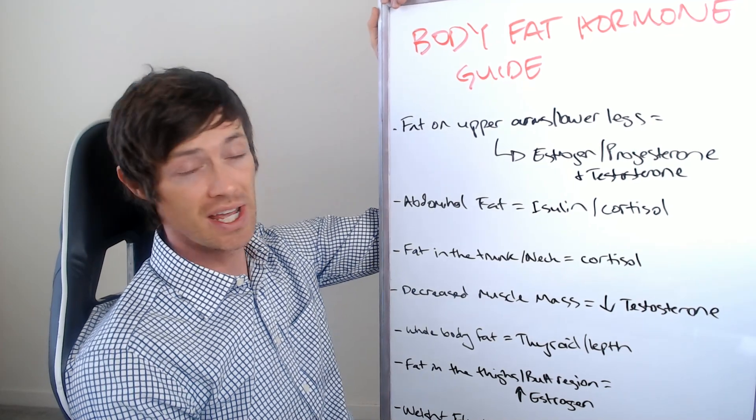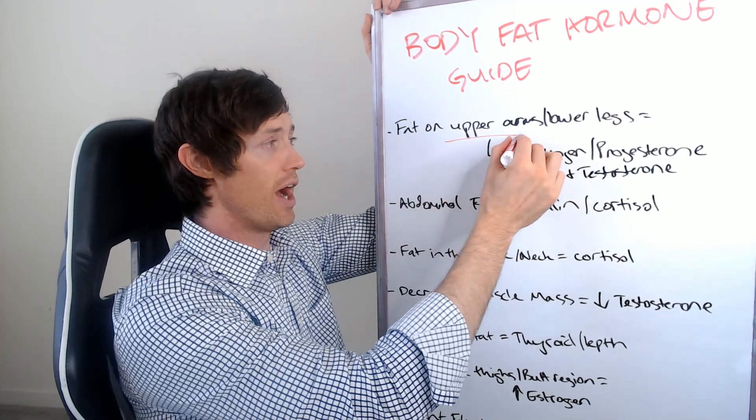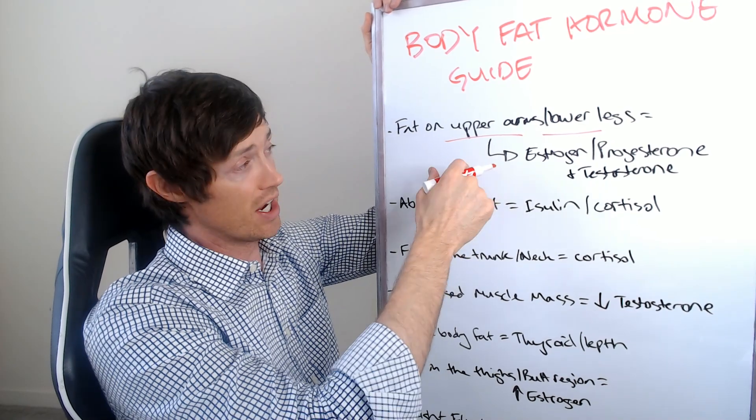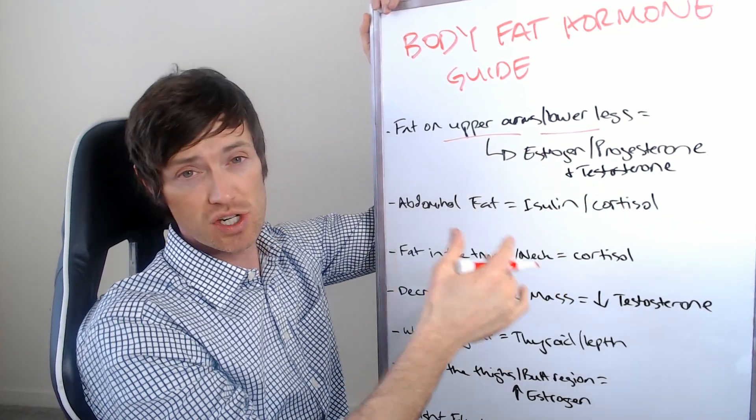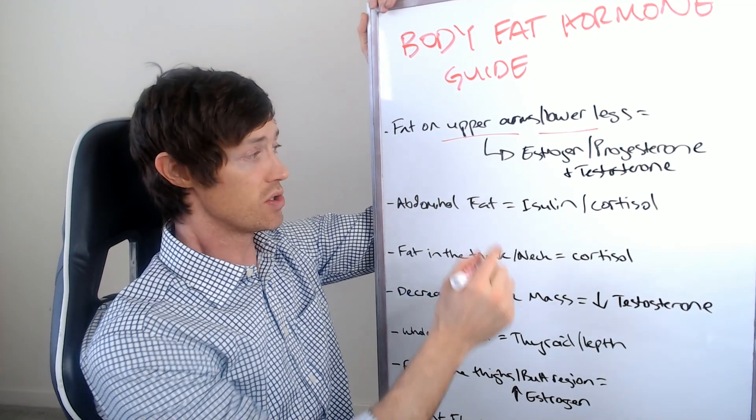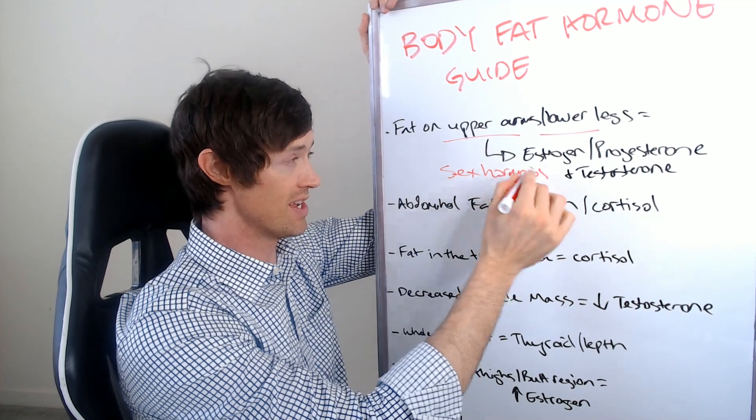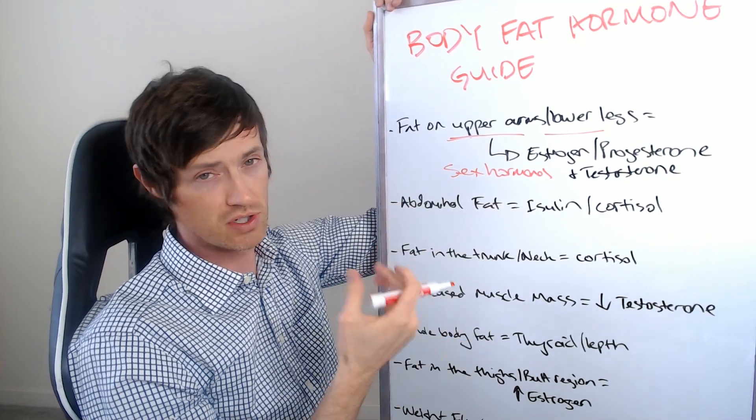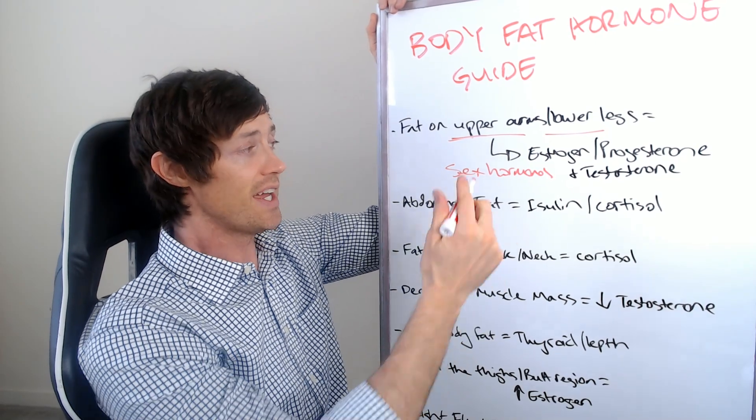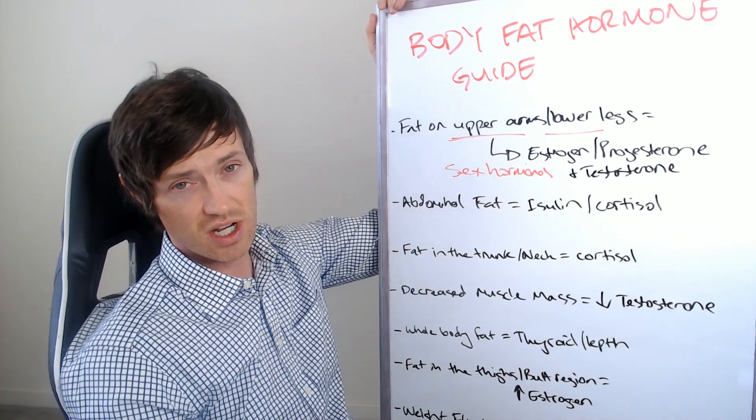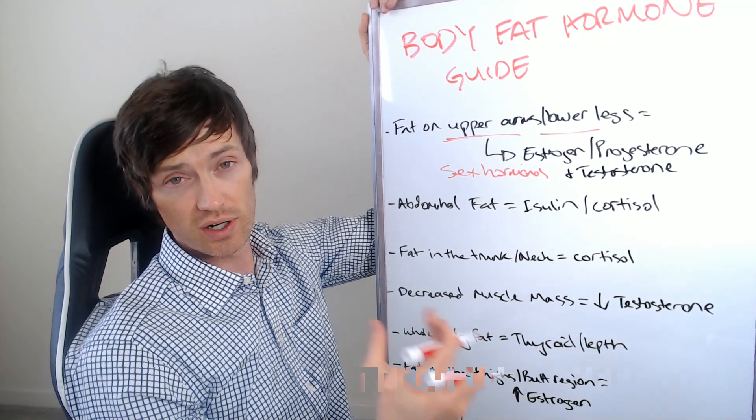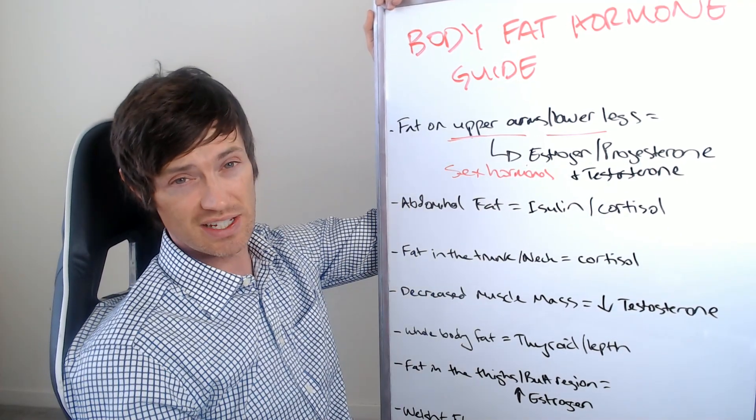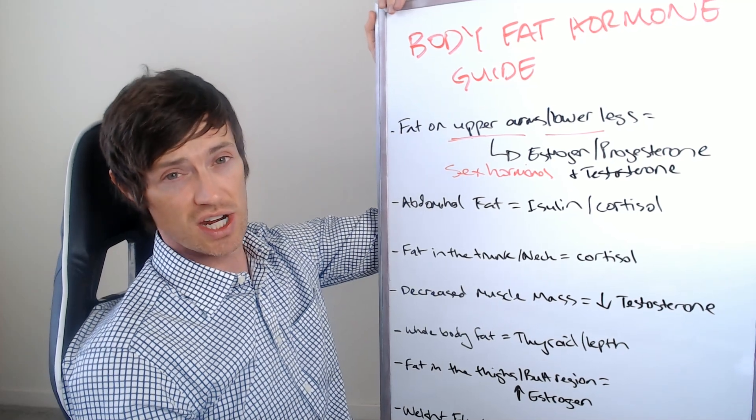So let's talk about fat on the upper arms and lower legs. Now, these are areas which are unusual for people to gain body fat. And in my experience, people who have body fat in their upper arms and lower legs tends to be caused by estrogen, progesterone, and testosterone imbalances. So these are your sex hormones.